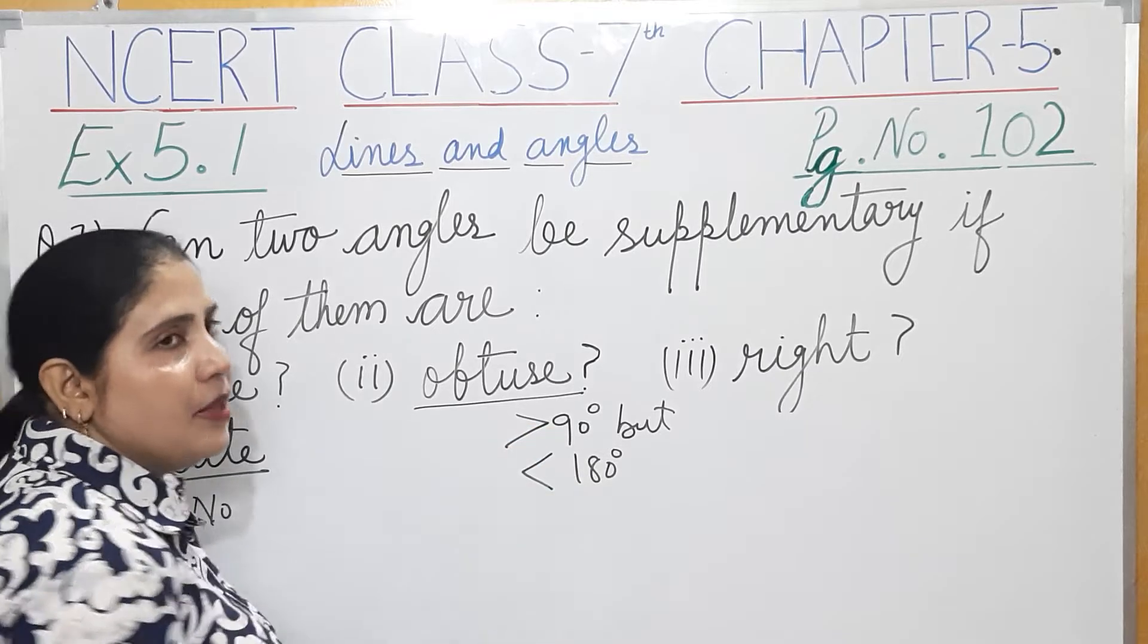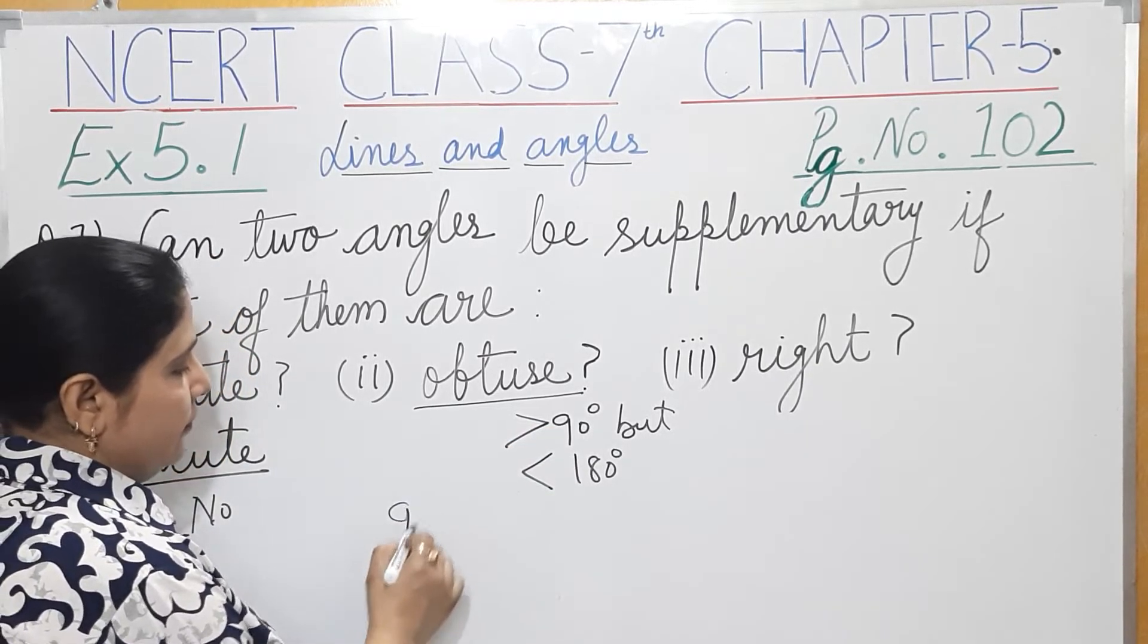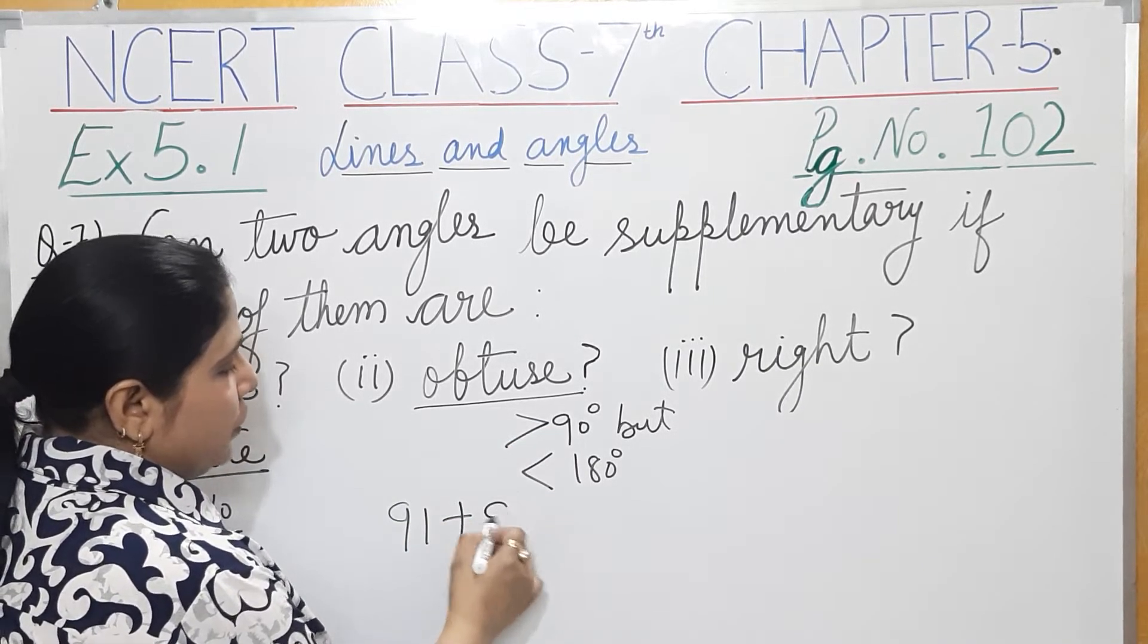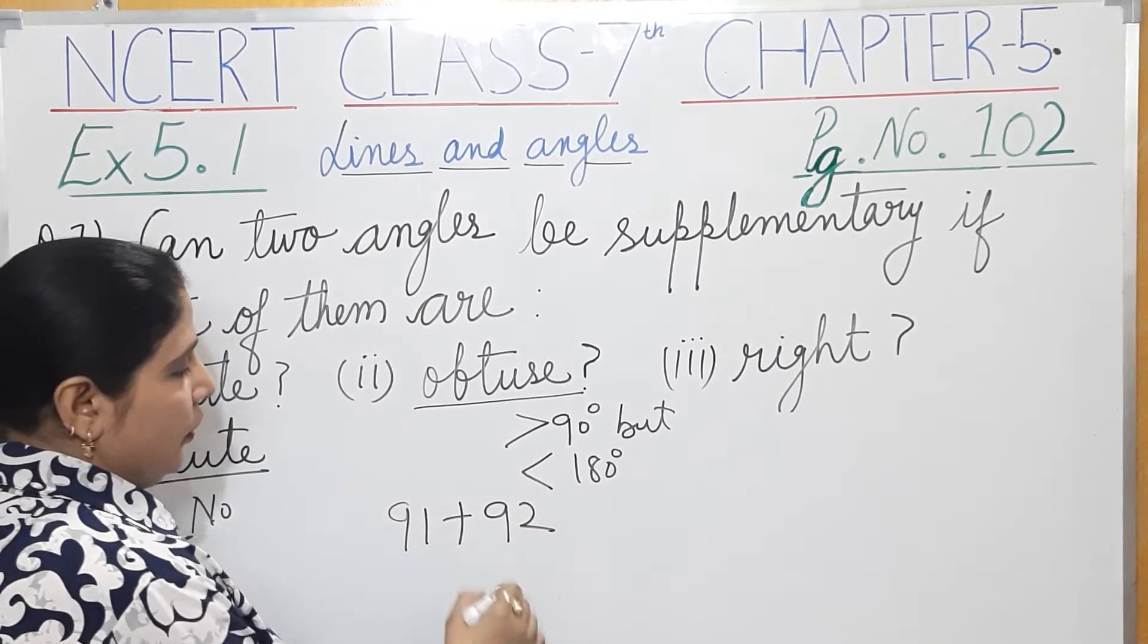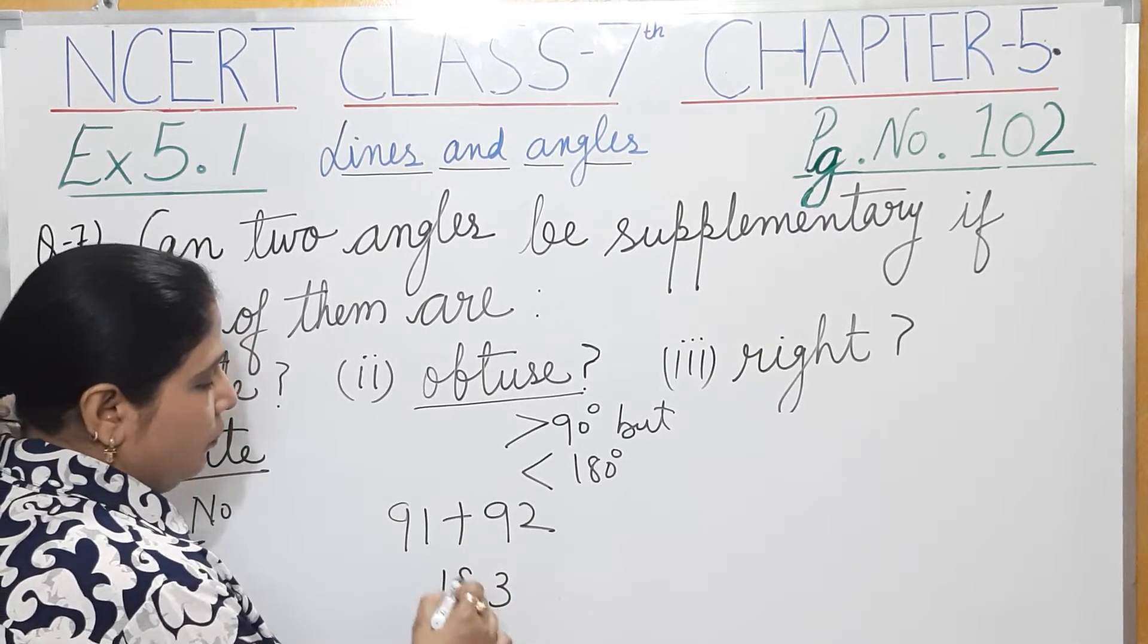If we take two obtuse angles, let's suppose just greater than 90 - 91 and 92. Their sum will be 3 and 9 is 9, so 183 degrees.